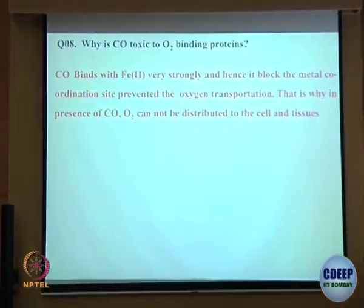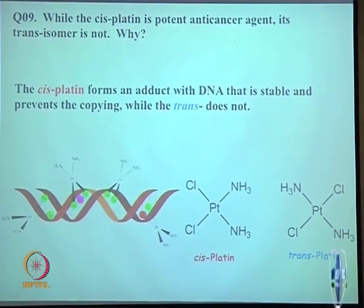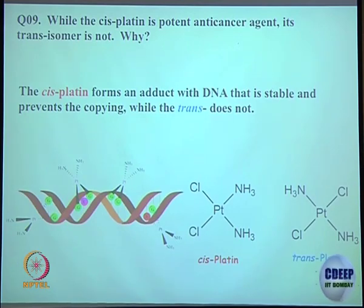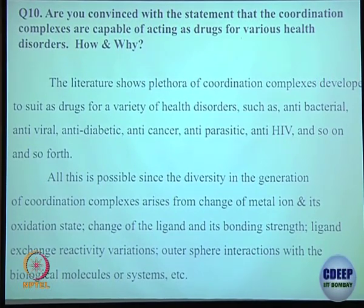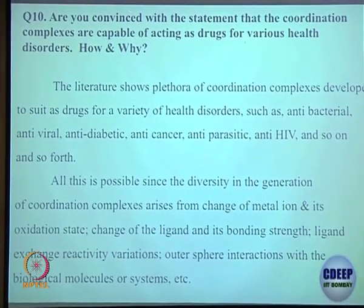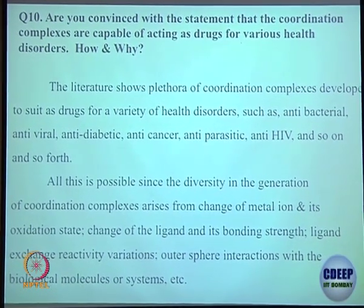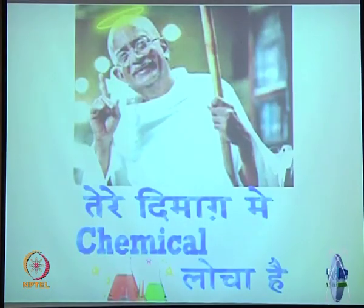Why is CO toxic? We have discussed that. While cisplatin is a potent anticancer agent, its trans isomer is not — that is transplatin. The two guanines are binding in the cis form; in the trans isomer the chloride leaves but the geometry prevents proper DNA cross-linking. Are you convinced that coordination complexes are capable of acting as drugs? There are medicines — some of us are taking at some time in our life — which have metal in them.